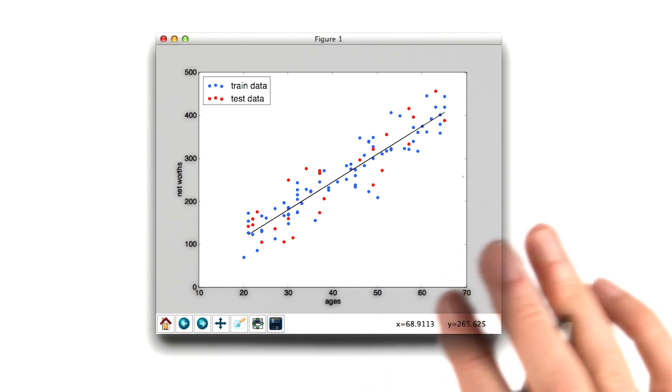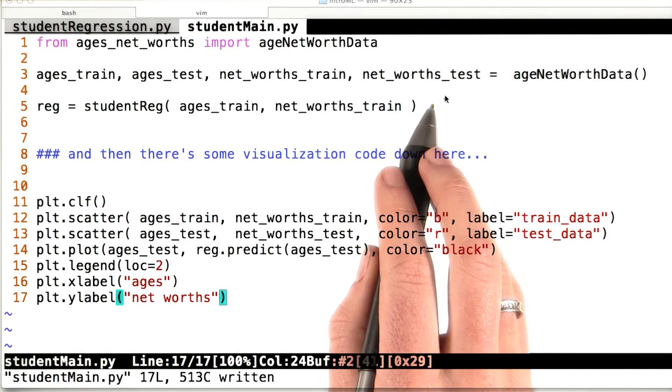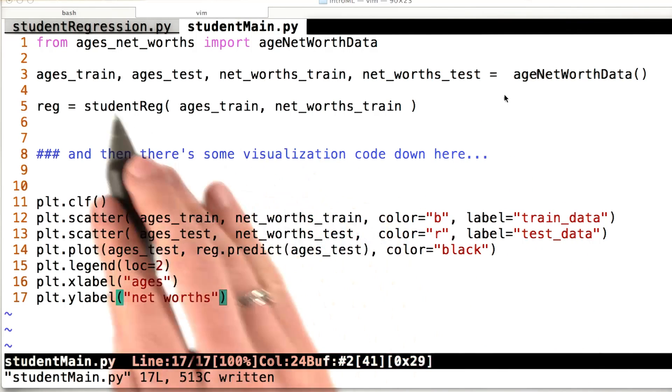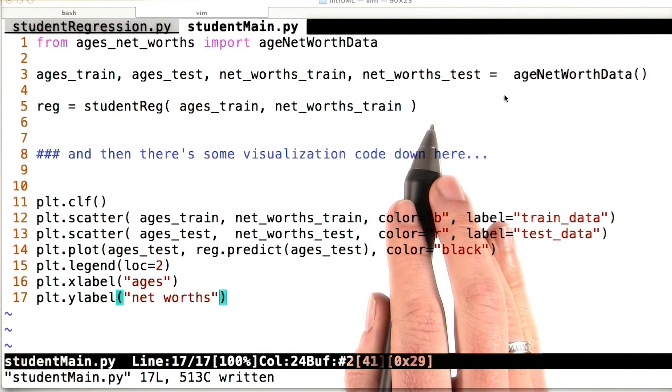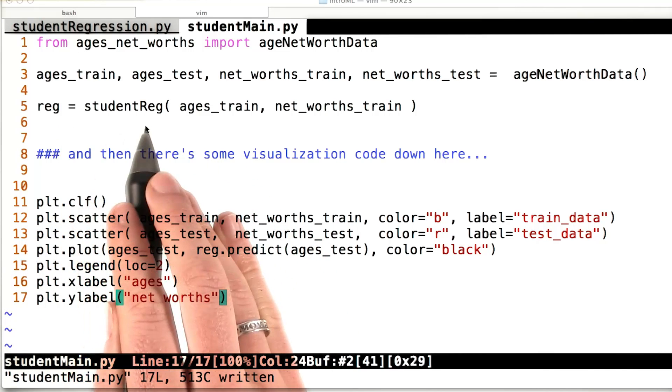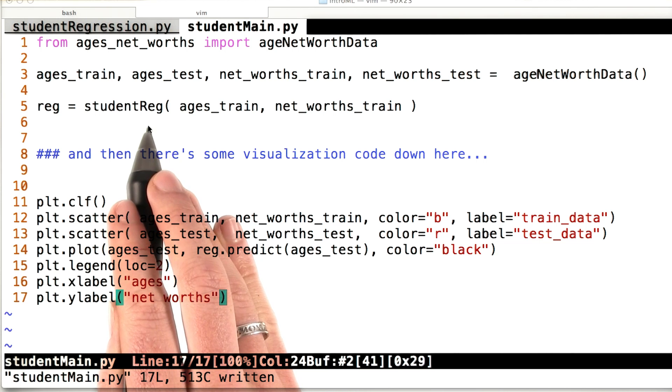Let me show you a little bit of the setup code that I've given you. And in the quiz, I'll have you fill in the blanks. So when you get into the quiz, here's what it's going to look like. I create training and testing data for you with the ages and the net worths that you're going to be using. And then the meat of the regression is actually going to be in this student reg function.